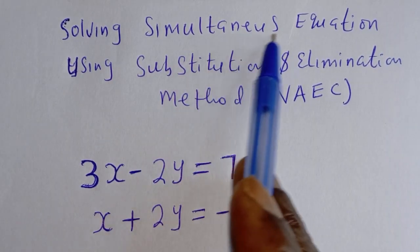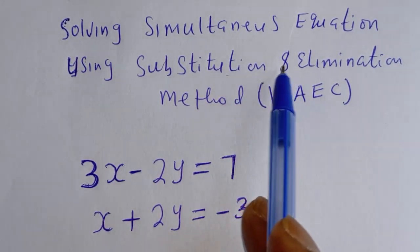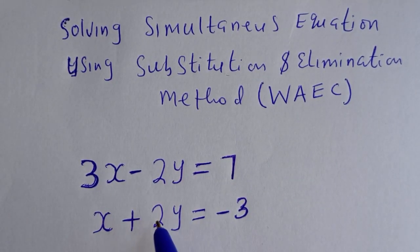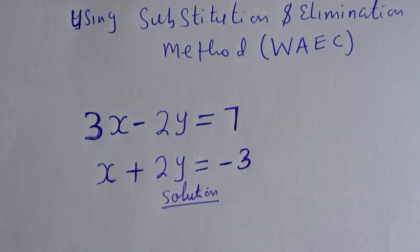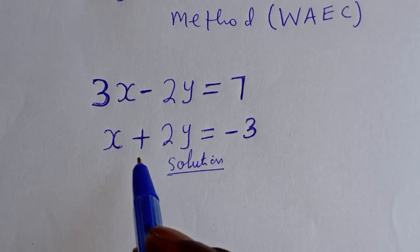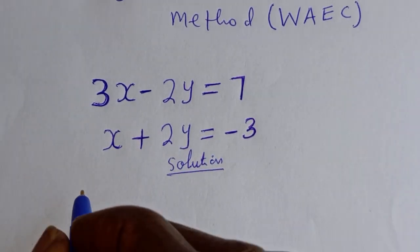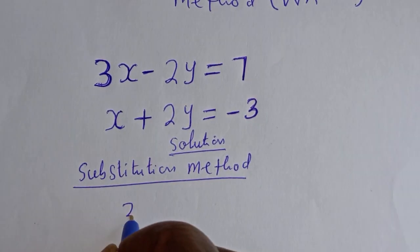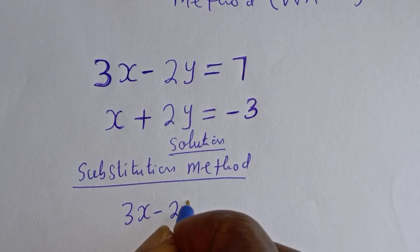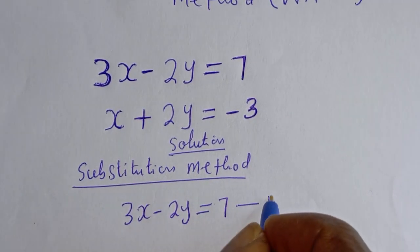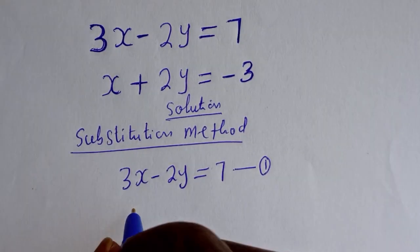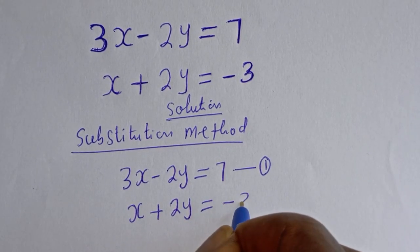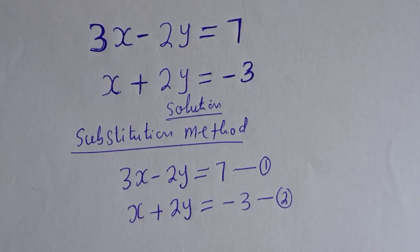Hello. Solving simultaneous equations using substitution and elimination method. The equations are: 3x minus 2y is equal to 7 — let's call this equation 1 — and x plus 2y is equal to minus 3 — let's call this equation 2.